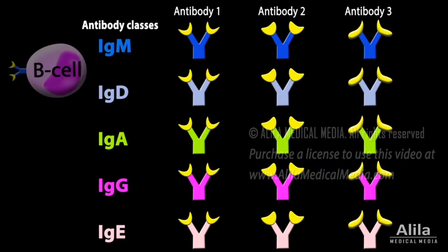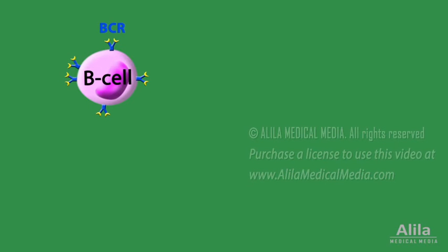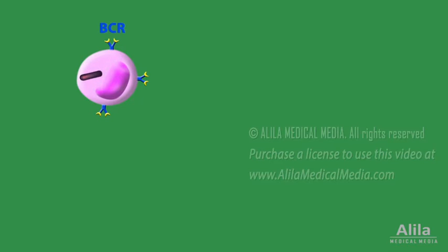The surface receptors on B cells are IgM and IgD molecules. Each B cell has thousands of identical copies of BCR on its surface. When a pathogen binds, it usually binds to several of these receptors, linking them together and triggering endocytosis of the pathogen. B cells then cut the pathogen into pieces and display them on MHC2 molecules on their surface. Thus, B cells now become antigen-presenting cells, but are not yet activated.